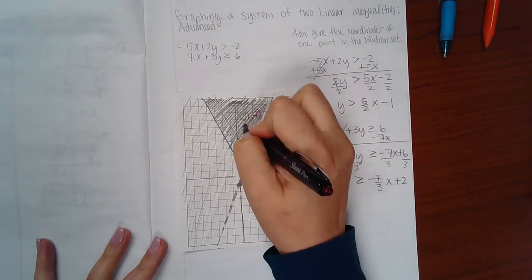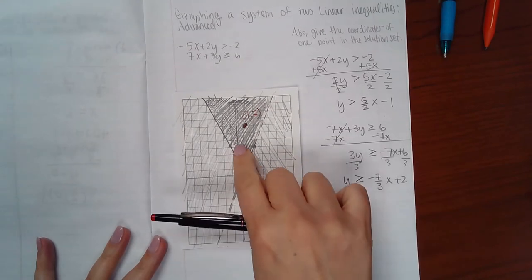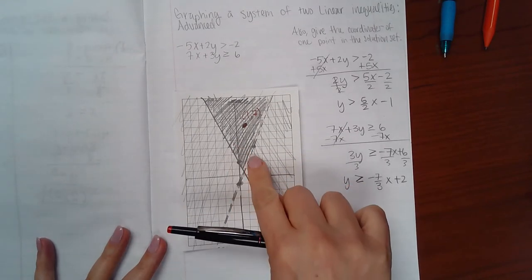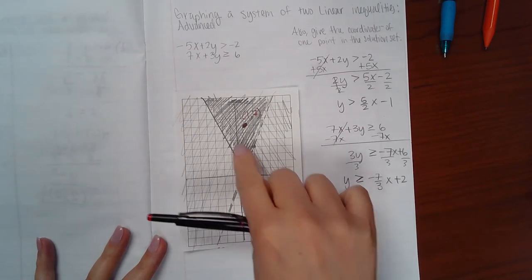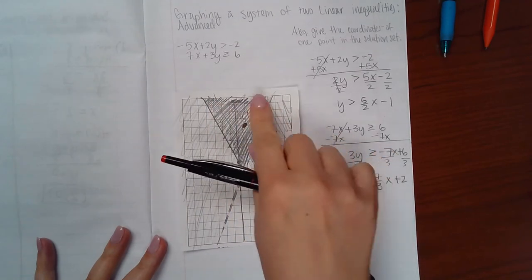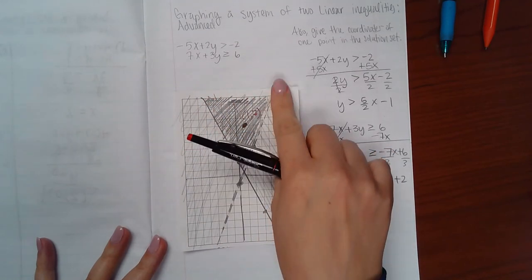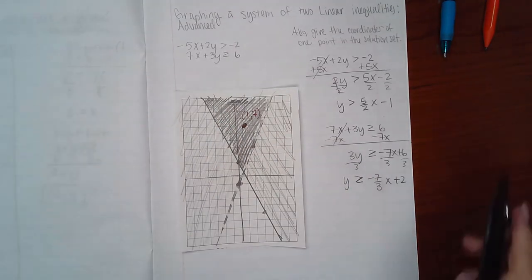You could have picked any point—you could have picked a point on the y-axis, you could have picked a point further into the corner, over here, or over there. As long as it's in that shaded region, any of those points will be correct.